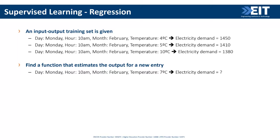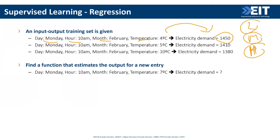There's also regression, where the output is not a category but a number you want to predict. For example, predicting electricity demand in a city given the day, hour, month, and temperature. The output could also be made into categories — low, medium, or high demand — in which case it's classification. If the output is a continuous number, it's regression.